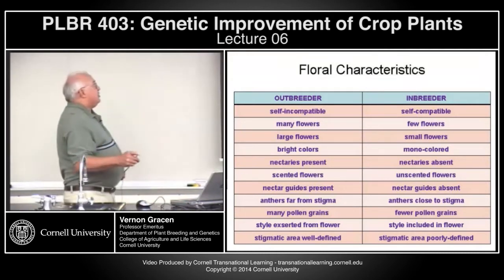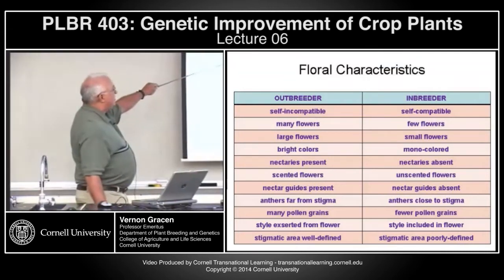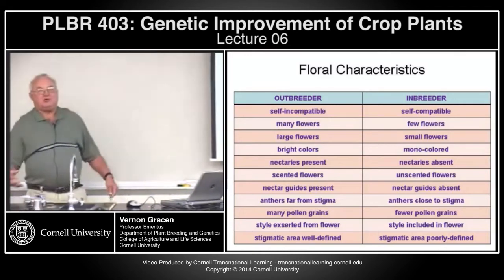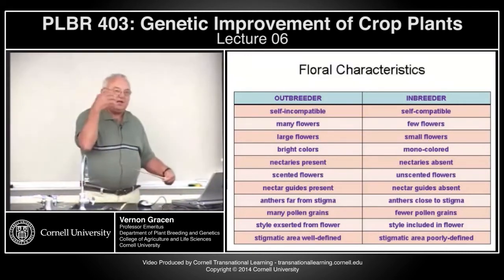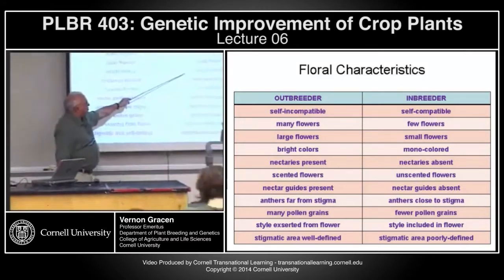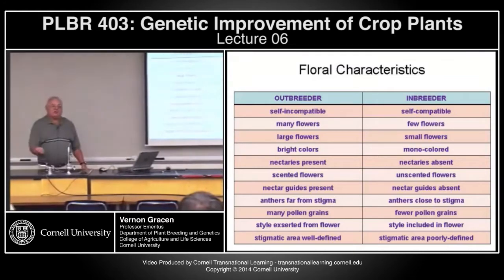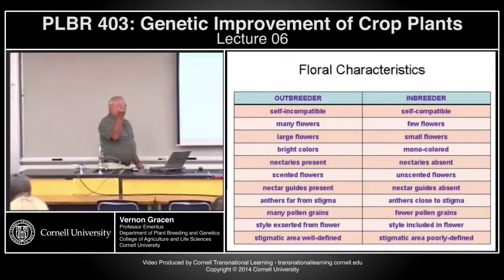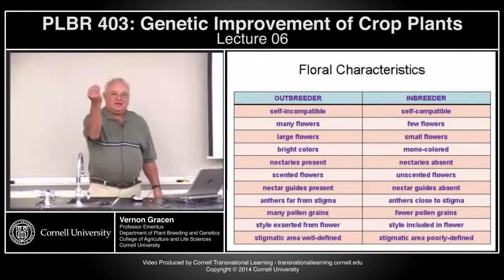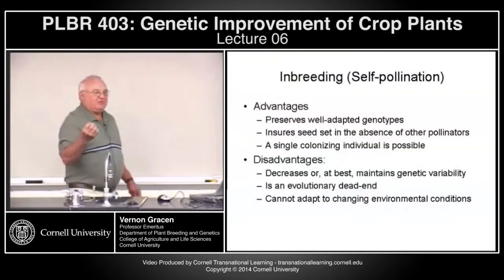You can often tell whether plants are outbreeders or inbreeders. Outbreeders often have lots of flowers, large flowers, bright colors, nectaries, and scented flowers — all sorts of things to attract insects, birds, or mammals to collect and disperse pollen among other plants. Inbreeders often have few, very small flowers, no color variation, no nectaries, no scents, and anthers usually close to the stigmas — often enclosed in a flower that opens after pollination or doesn't open at all, forcing inbreeding.